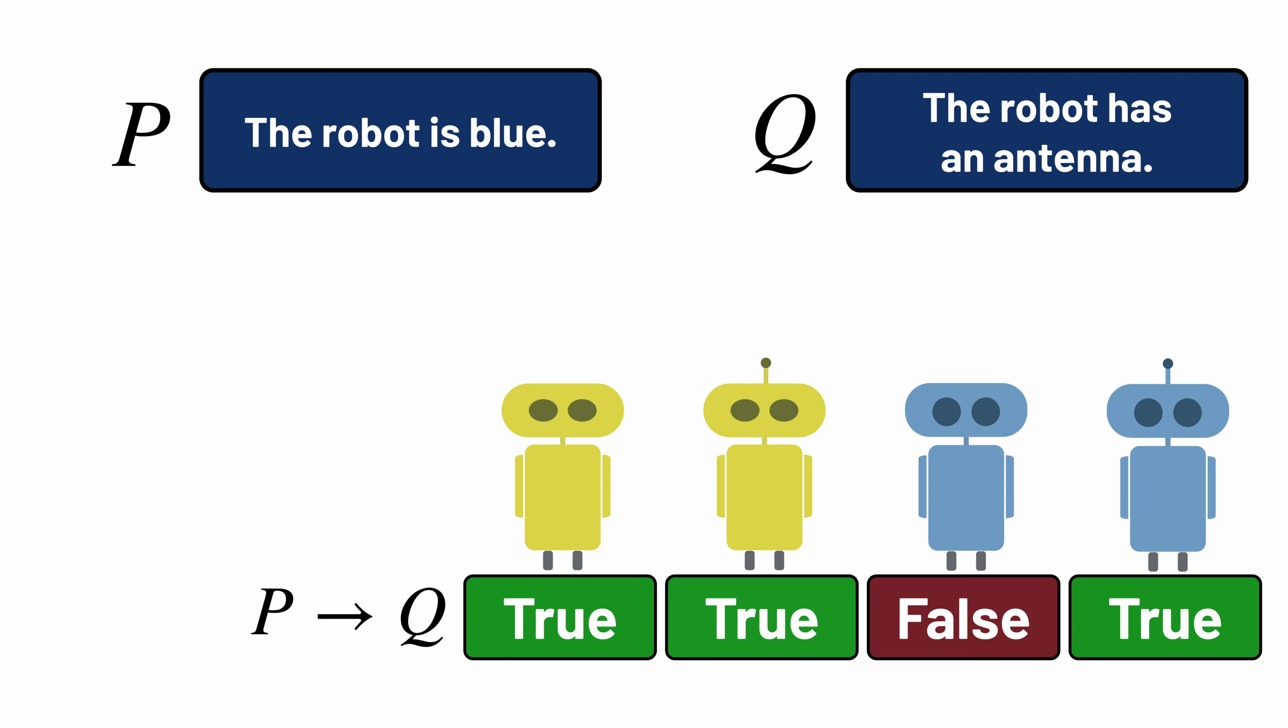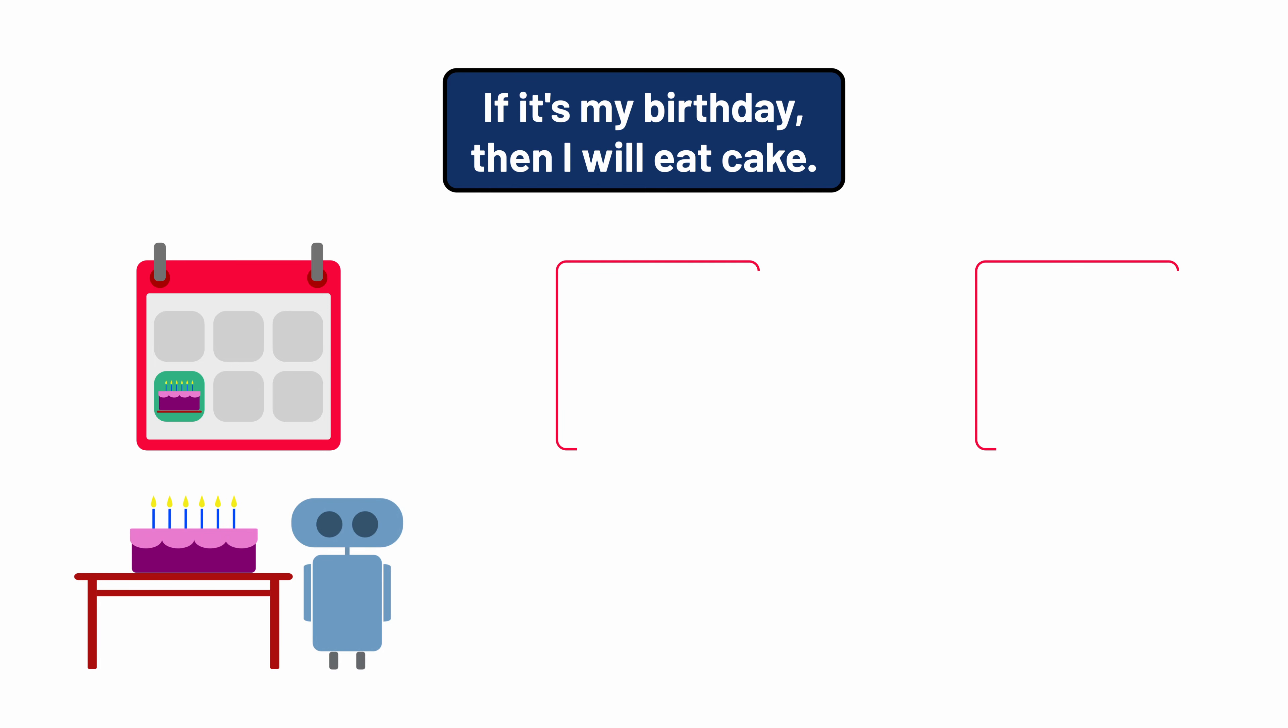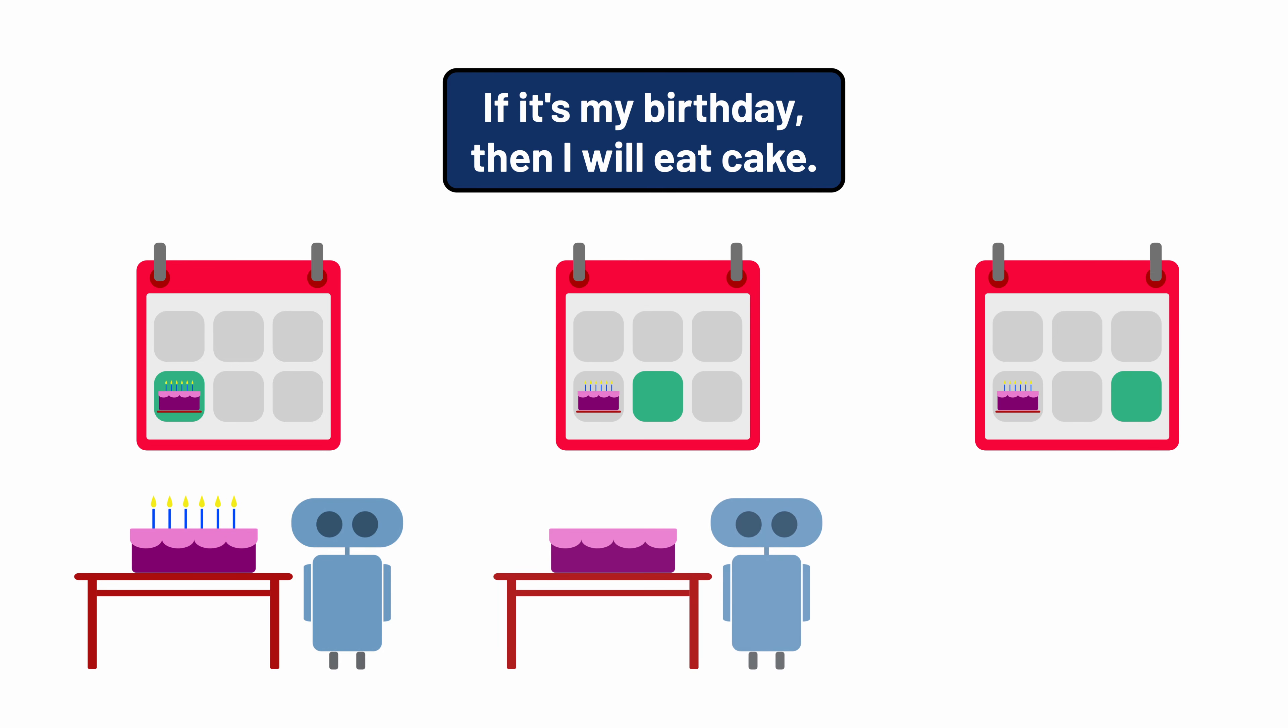It can be a little tricky to wrap your mind around the idea that P implies Q is true in all cases where P is false. But this fits logically with how we use the ideas of if and then in everyday life. For example, imagine you said something like, 'if it's my birthday, then I will eat cake.' For that to be true, then on your birthday, you need to eat cake. But on days where it's not your birthday, you might eat cake, or you might not, and you could still be telling the truth.